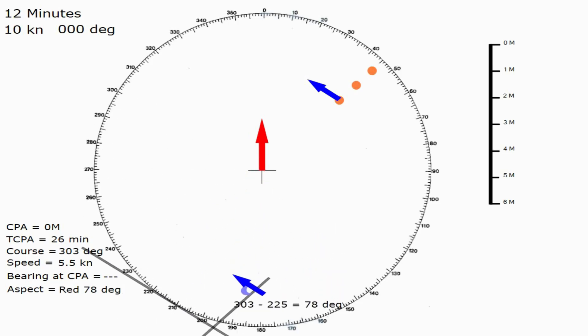Now, after all that, we've completed the plot. Completing the plot simply means finding the closest point of approach, time to the closest point of approach, target vessel's course and speed, their bearing when they're at the closest point of approach, and their aspect.